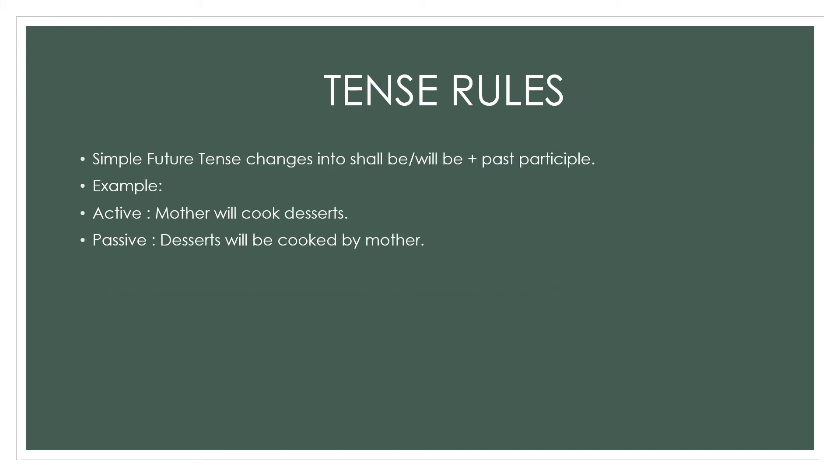Third tense rule: simple future tense changes into shall be/will be plus past participle. For example, active voice: 'Mother will cook desserts.' The verb 'will cook' tells us it is in simple future tense. The passive voice becomes: 'Desserts will be cooked by mother.'